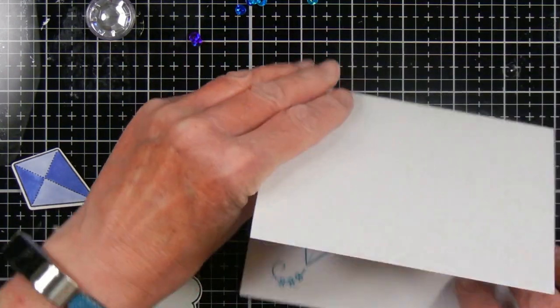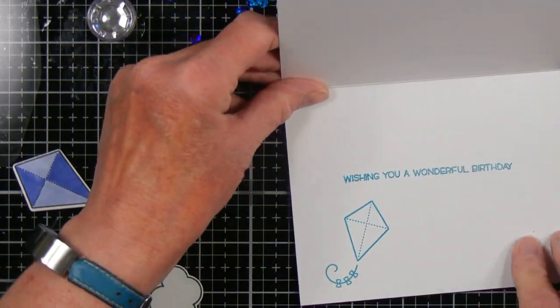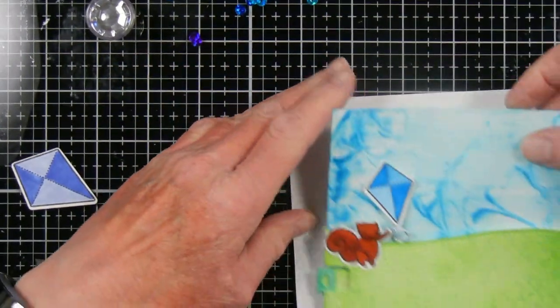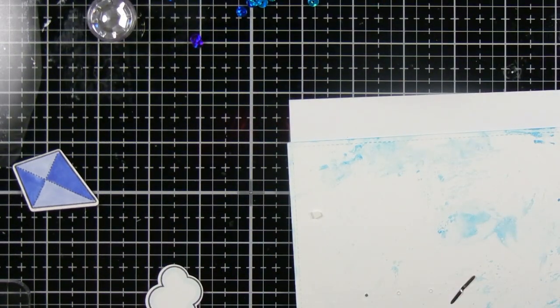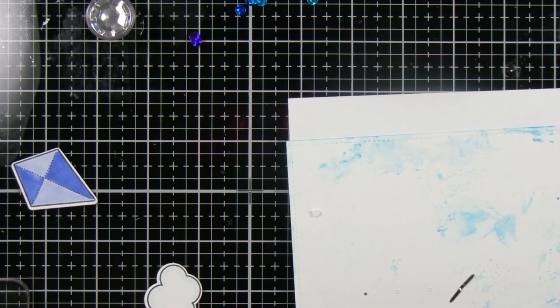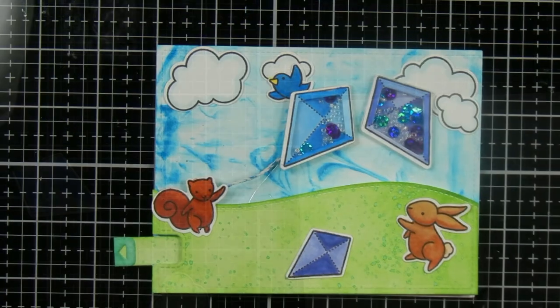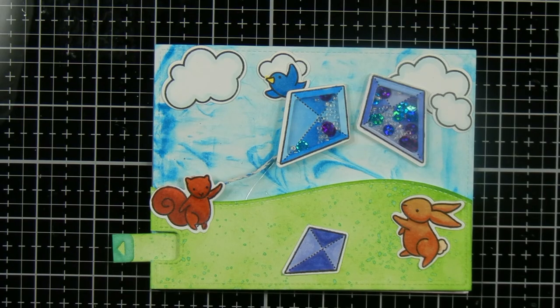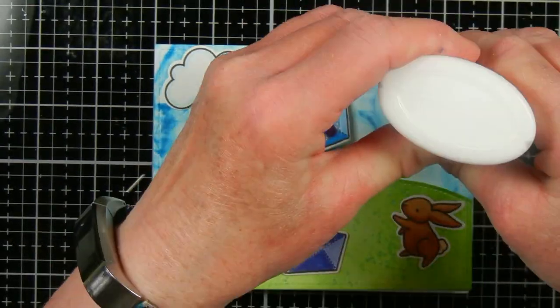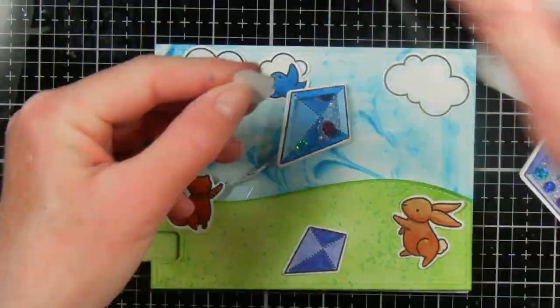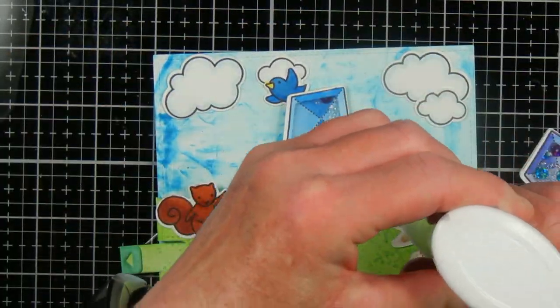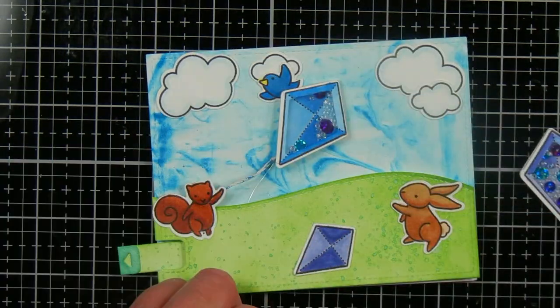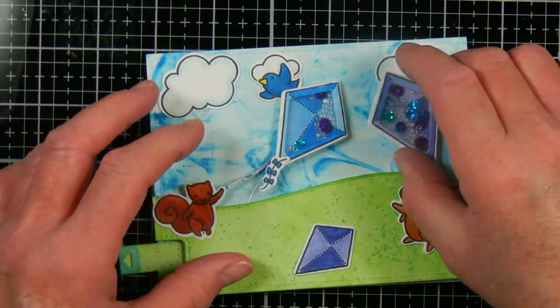Off screen I went ahead and got a card base ready that says wishing you a wonderful birthday, and I stamped a kite inside. Then I just glue this panel to the front of my card, and that's where the camera went off because I think the battery died. While the camera was recharging I went ahead and made another purple kite, and I actually decided I like the shaker kite better where I had the little one, so I just glued this blue shaker one we made earlier over the other kite.